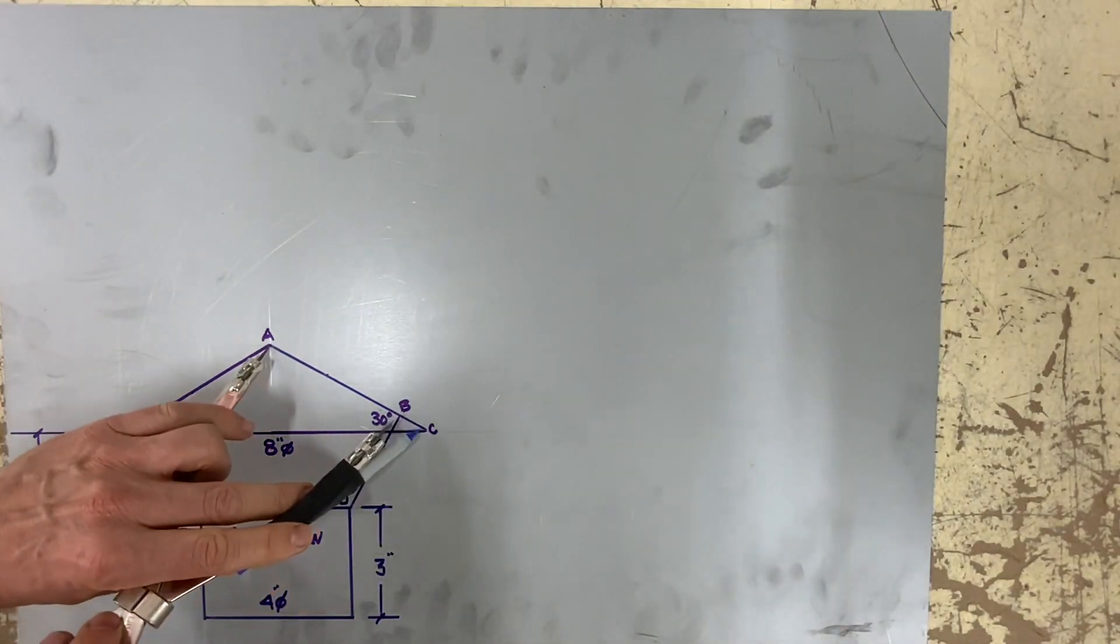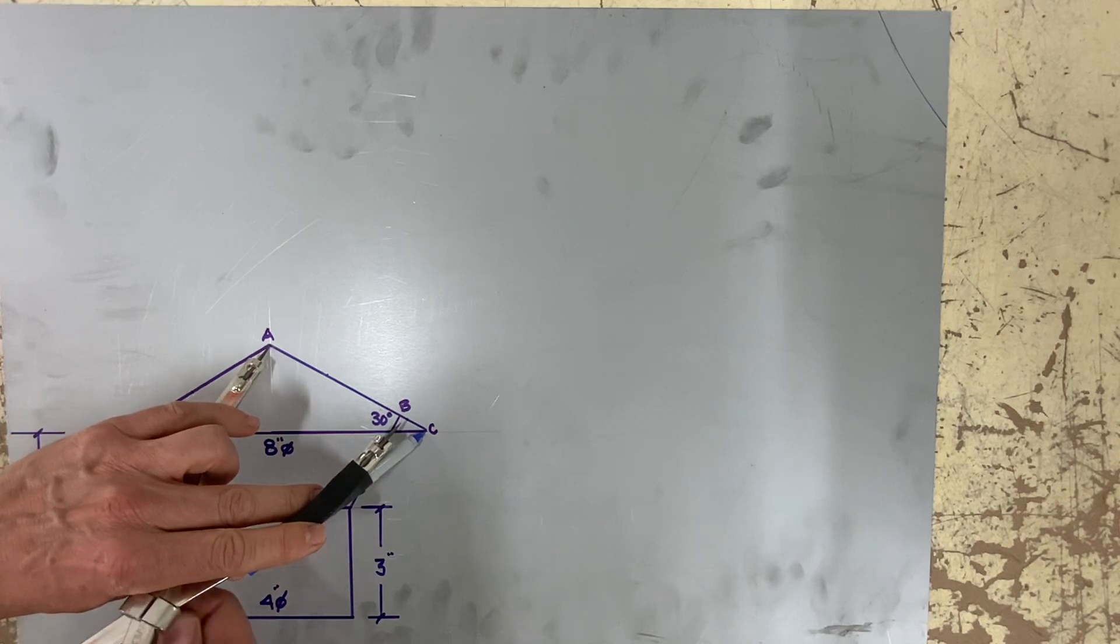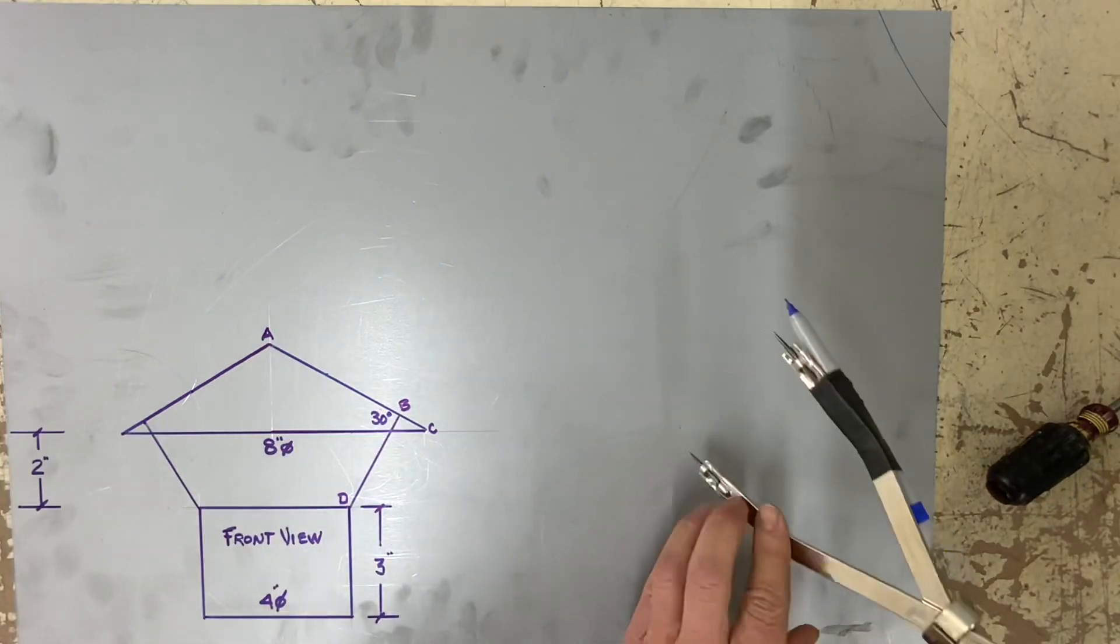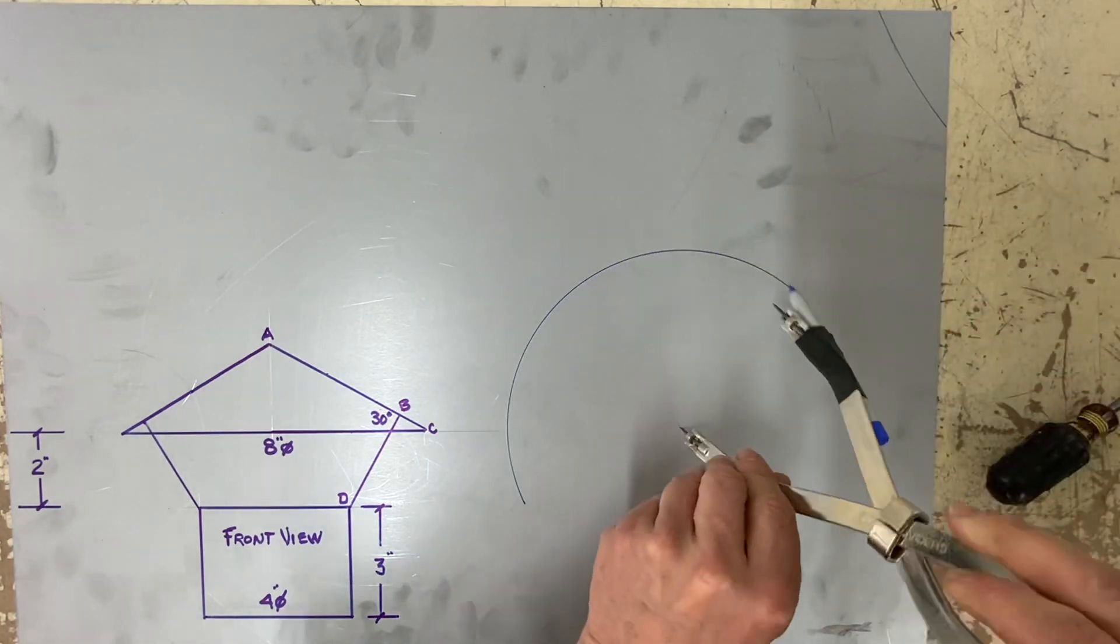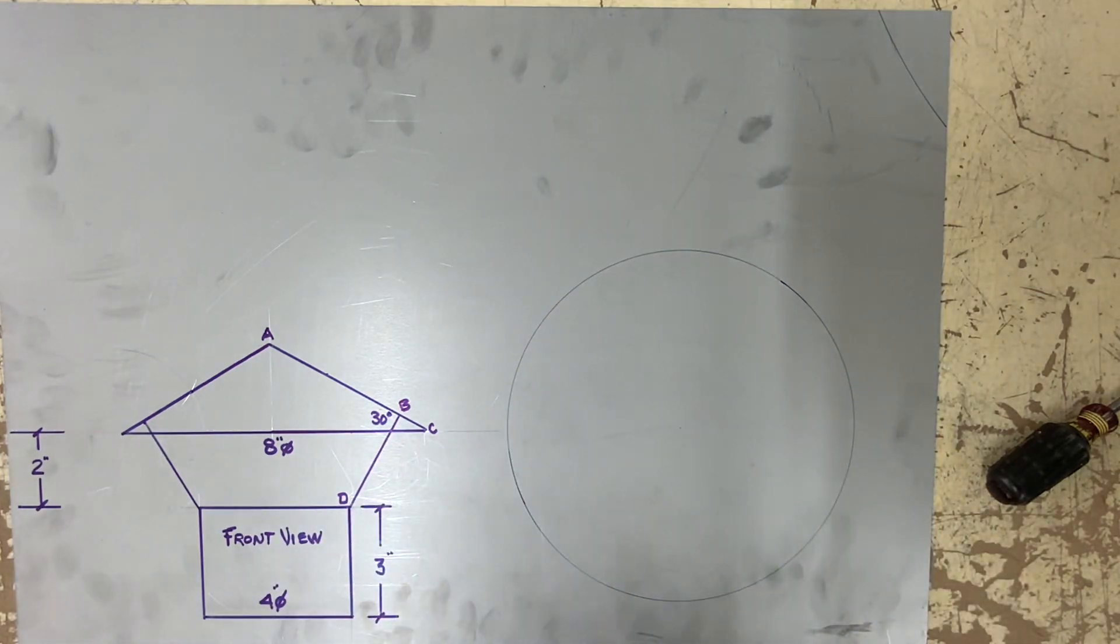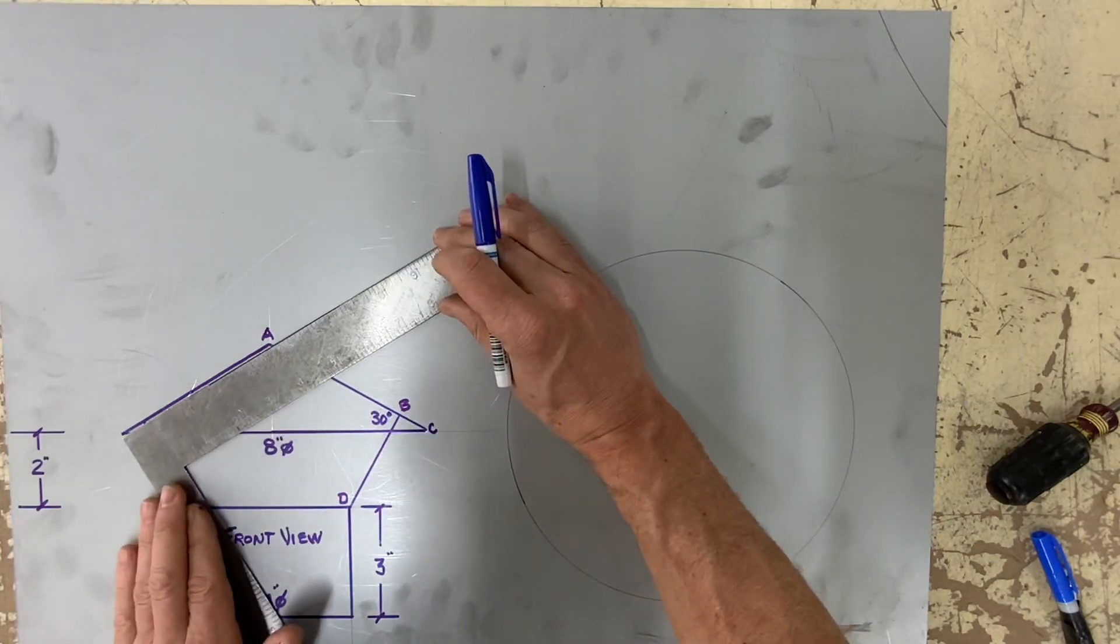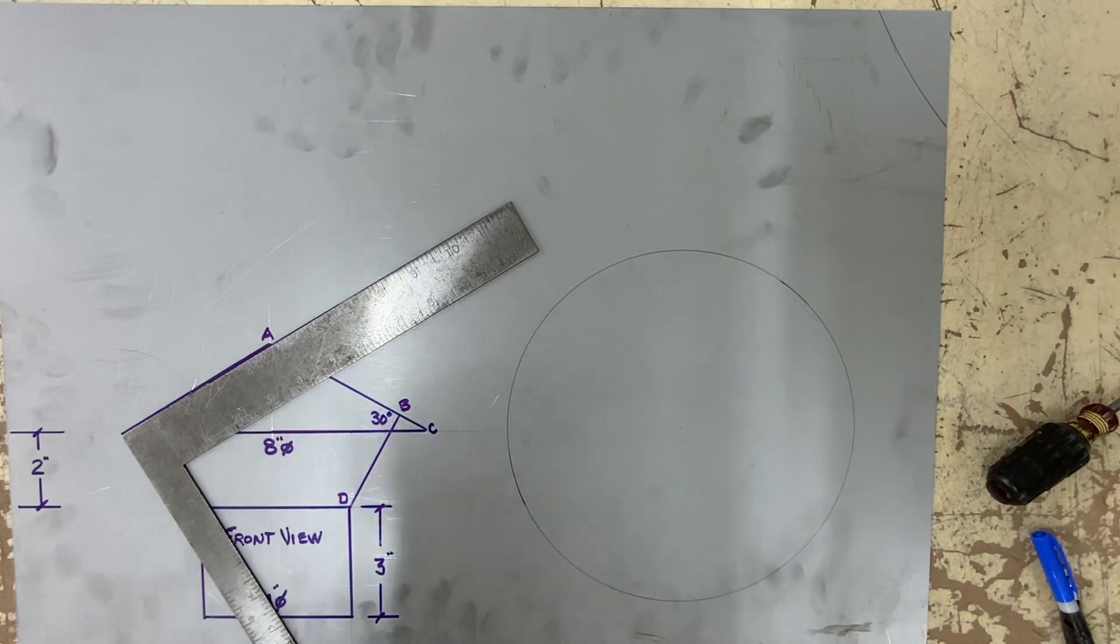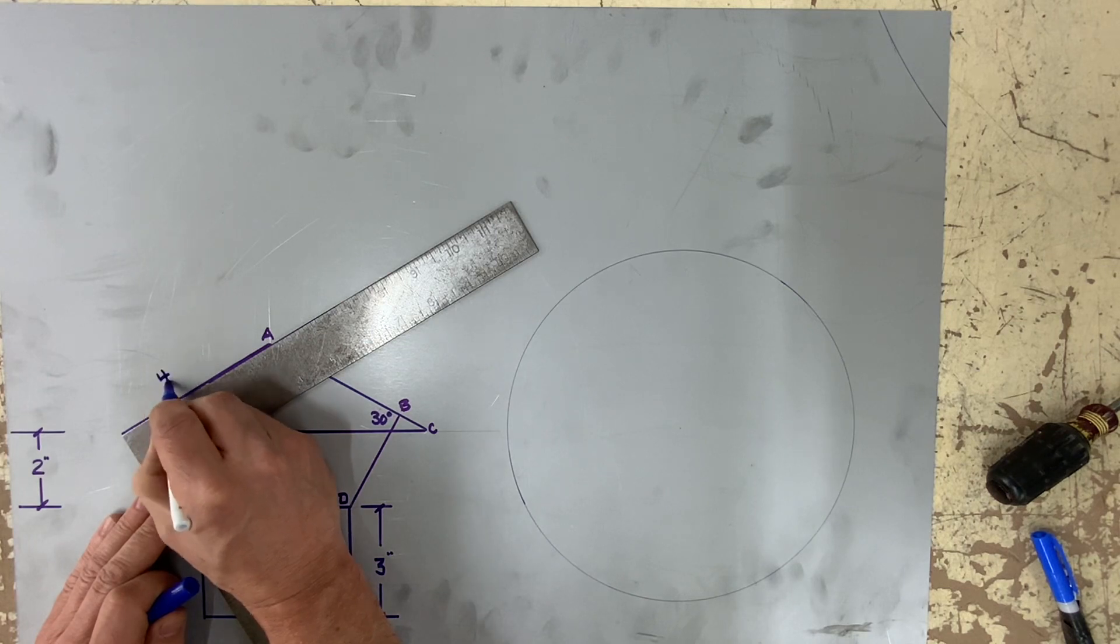Now let's go ahead and start the pattern. Set your compass to AC, which is the slant side of the right cone. Now scribe a circle. This is AC. It's not eight inches. It is the radius of AC, and the radius of AC is 4.61.